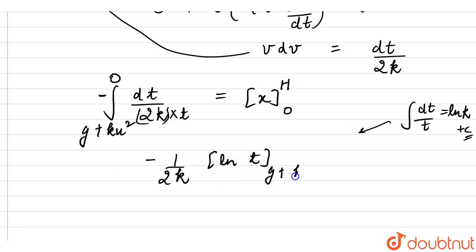The lower limit is g plus k u squared, upper limit is 0. This comes out to be, now let's put limits here. This is h minus 0. So minus 1 upon 2k. Let's put the limits.